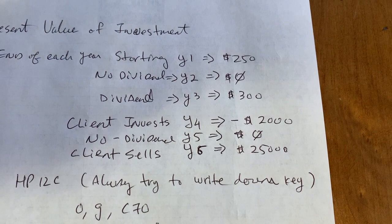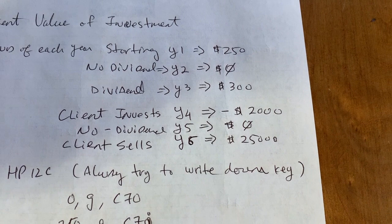Fourth year, they invest $2,000 into this portfolio. Fifth year, they get no dividend. And sixth year, they sell for $25,000.